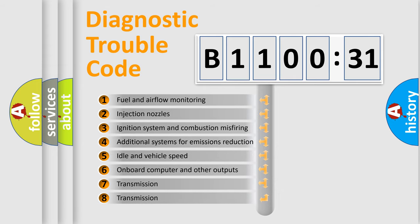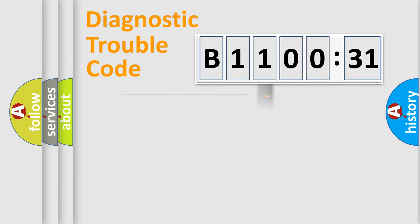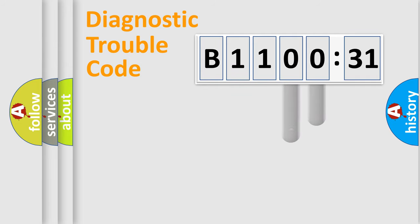The third character specifies a subset of errors. The distribution shown is valid only for the standardized DTC code. Only the last two characters define the specific fault of the group.